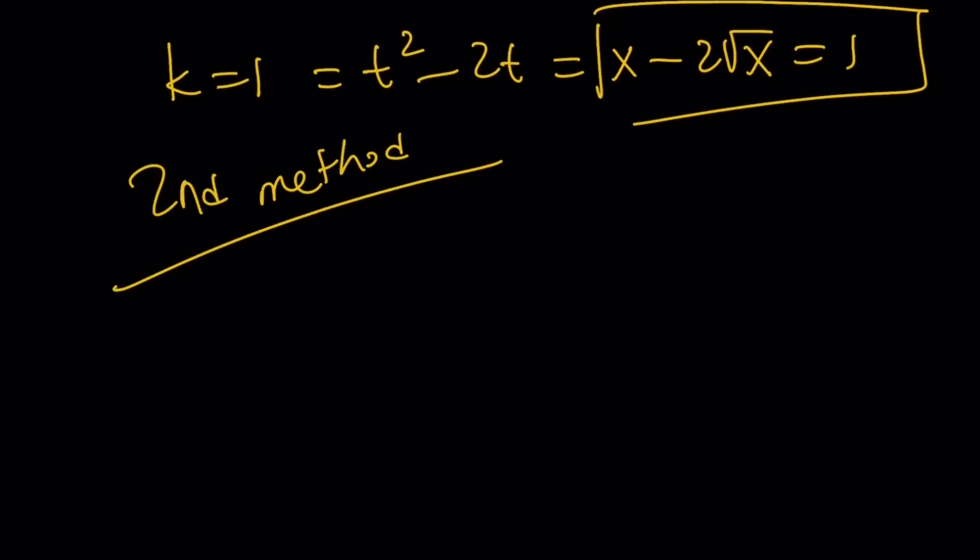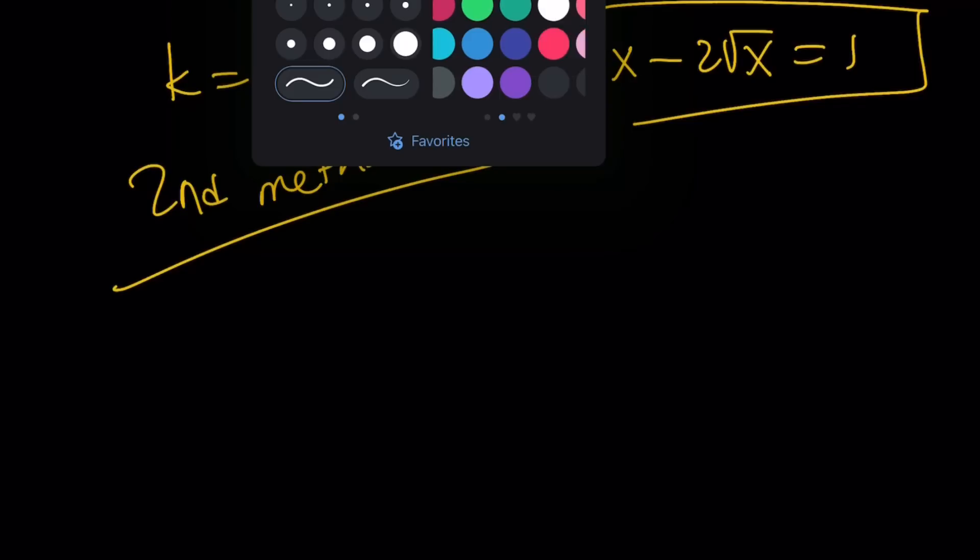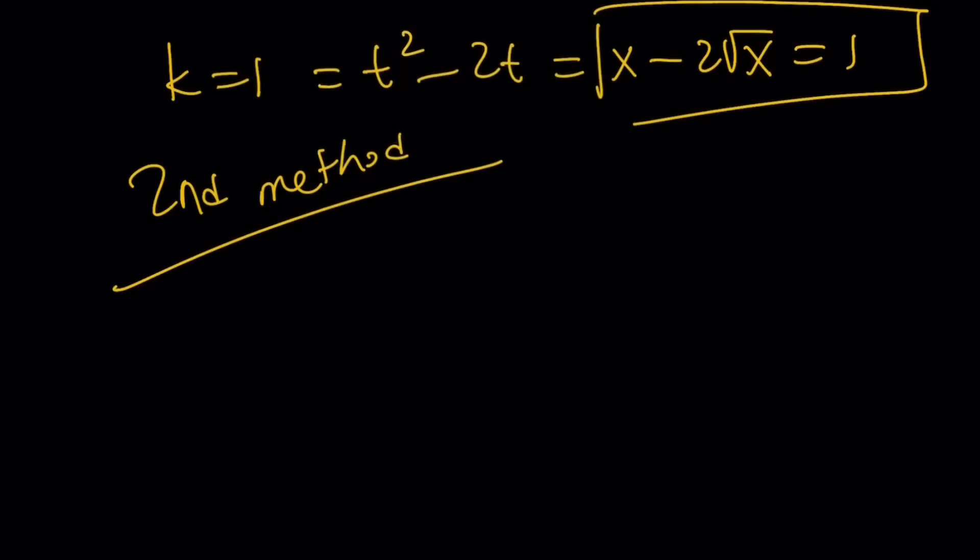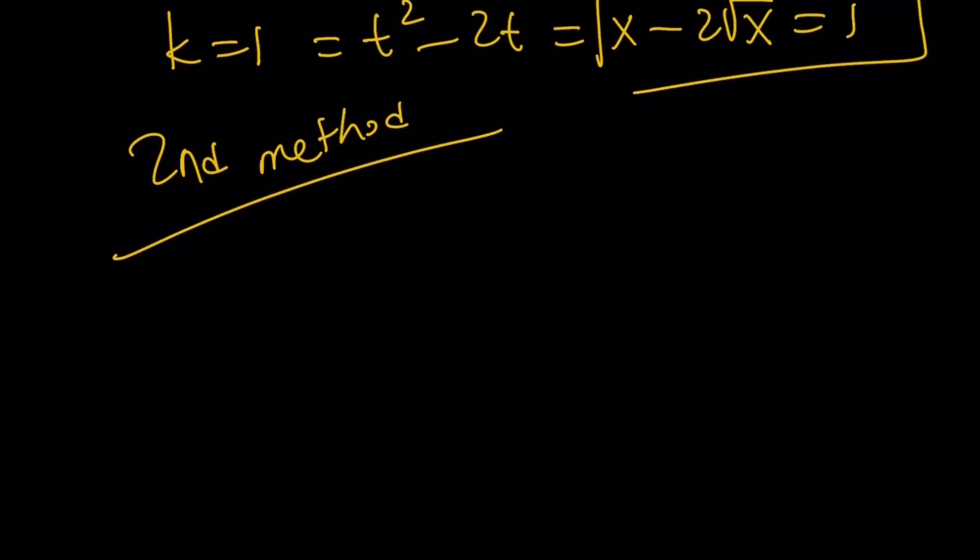And I'm hoping that second method you will find cooler. That is the hope. So for my second method, I'm going to do the following. First of all, I have x minus 2 over square root of x equals 5. And I'm trying to find the value of x minus 2 times the square root of x.